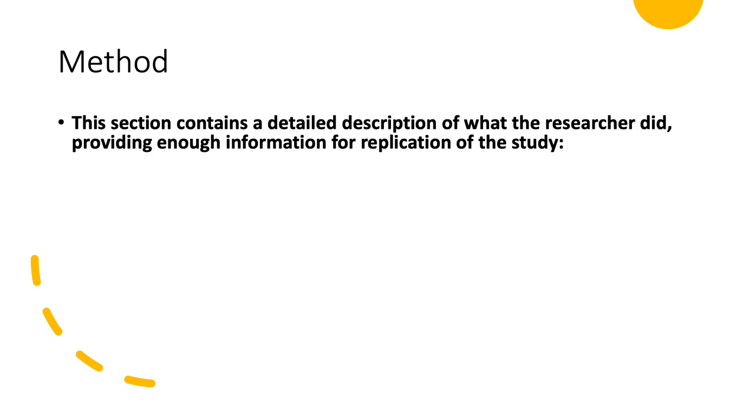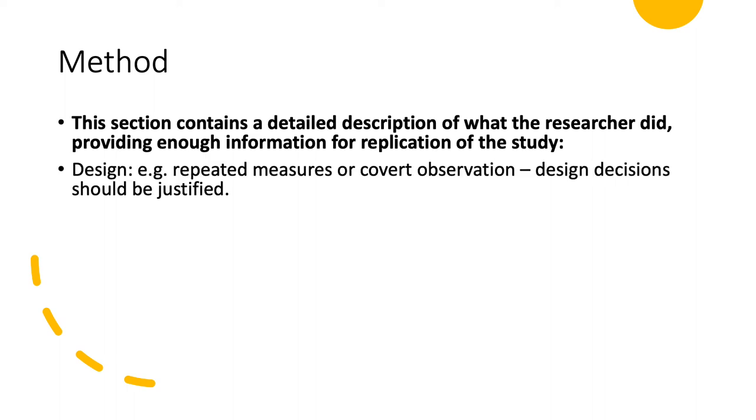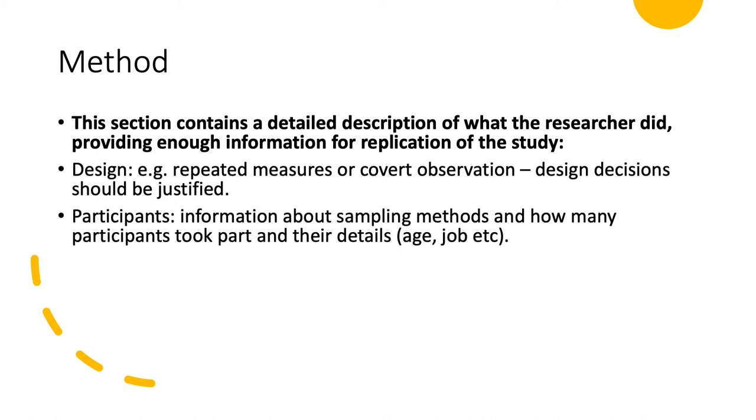Then you talk about your method. And this needs to be really detailed, because if someone reads your journal, your research project, you want them to be able to replicate it just based on what you've written. So, it needs to be very in detail. So, firstly, you talk about your design. So, was it repeated? Was it independent? Was it matched pairs? What kind of experiment was it? Was it a lab experiment? Was it a covert observation? And then you state why. So, why did you use that kind of experiment? Participants, how did you sample your participants? Was it volunteer? Was it opportunity, etc.? And how many participants took part? So, their age, their job, anything else that's relevant, like their gender, socioeconomic status, if that's relevant to your study as well.